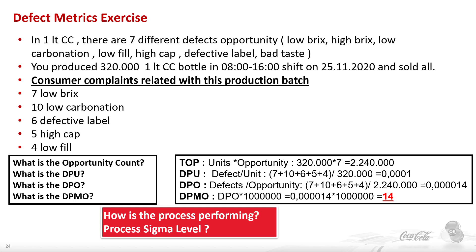The defects per unit is the number of defects — that is 17 plus 23 plus 32 — giving 32 defects out of 320,000 units, so defect per unit is 0.0001. The defect per opportunity is 32 divided by 2.24 million, which is 0.0000143. At the end, the defect per million opportunity equals DPO multiplied by one million, which comes to 14.